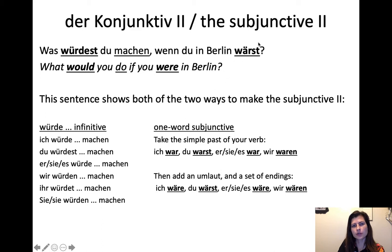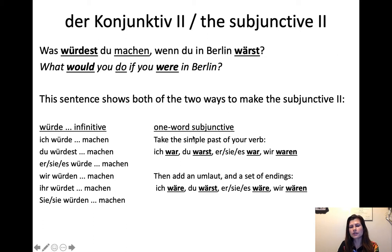How do we get to wärst? It comes from sein — to be. The way to form it is to start from the simple past: ich war, du warst, er/sie/es war, wir waren. Then to move into the subjunctive, you add an umlaut and slightly different endings. So: ich wäre, du wärst (also acceptable: wärst with or without the -e), er/sie/es wäre, wir wären. The umlaut is added to war, and the endings are the same as those used with würde.